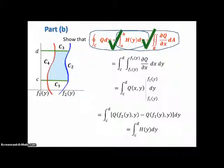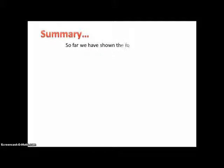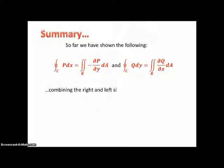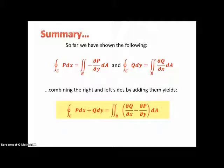Combining Part A and Part B: we have shown that the line integral of P dx equals the double integral of the negative partial derivative of P with respect to Y dA, and the line integral of Q dy equals the double integral of the partial derivative of Q with respect to X. Adding the left sides and the right sides together yields our famous Green's theorem. Quod erat demonstrandum — that which was to be shown.